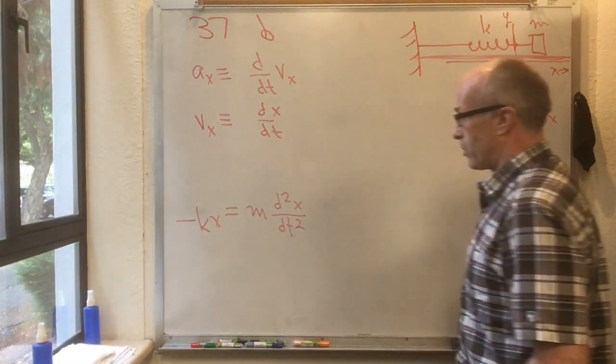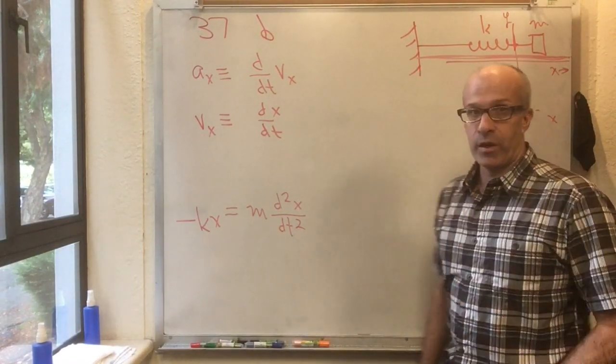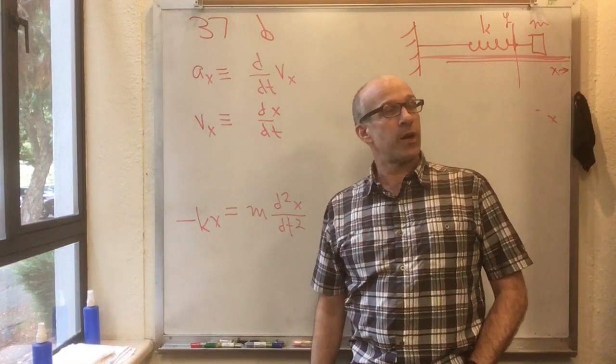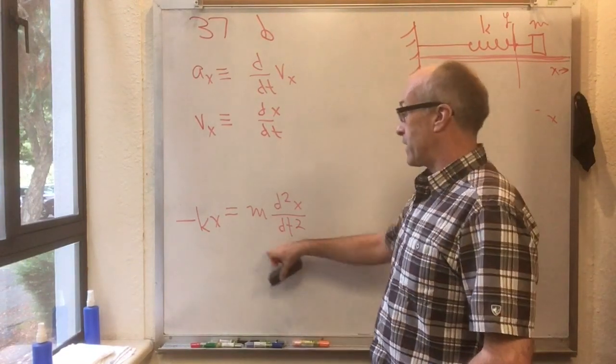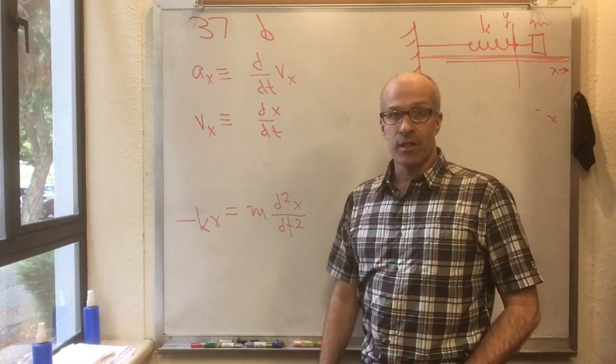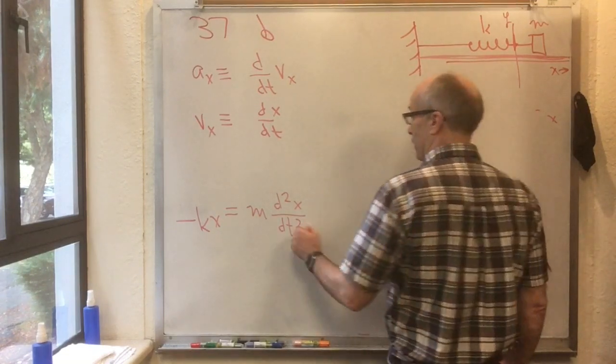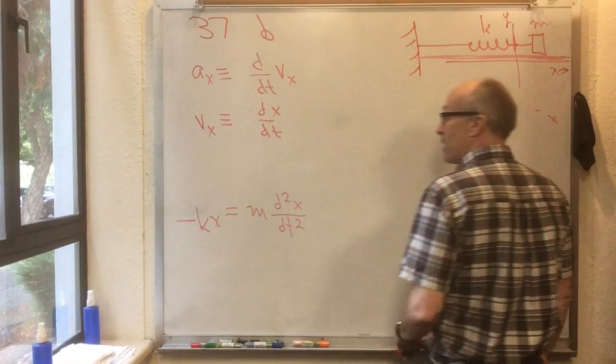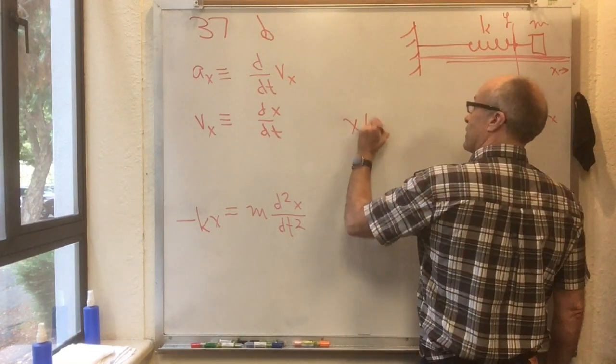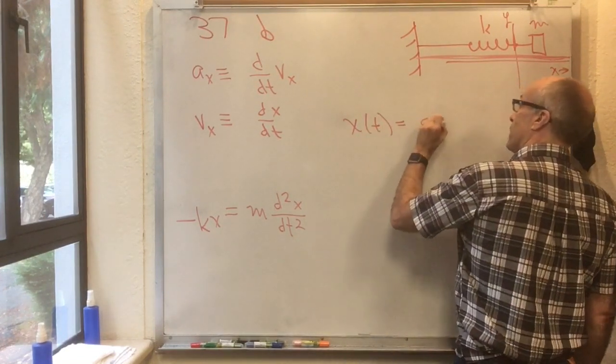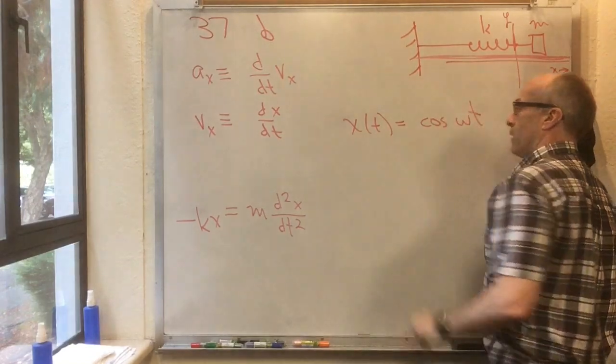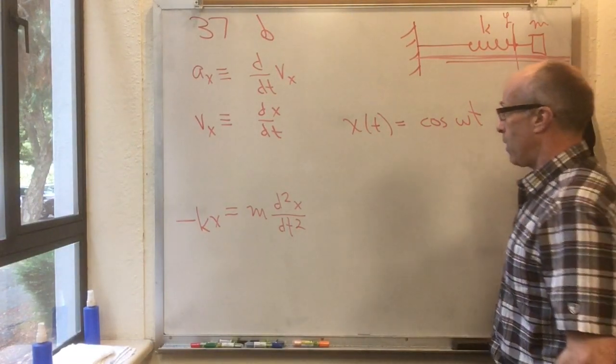Minus kx is equal to m d squared x dt squared. And this is an example of a differential equation. Differential equations are notoriously hard to solve. This one, though, is an easy one. And you can even just guess the answer. So let's guess the answer. I'm going to guess x of t is equal to cos omega t.